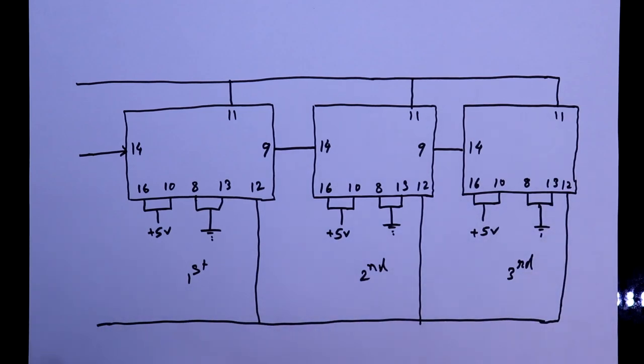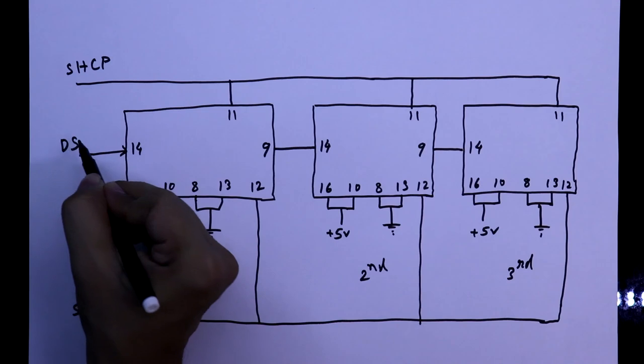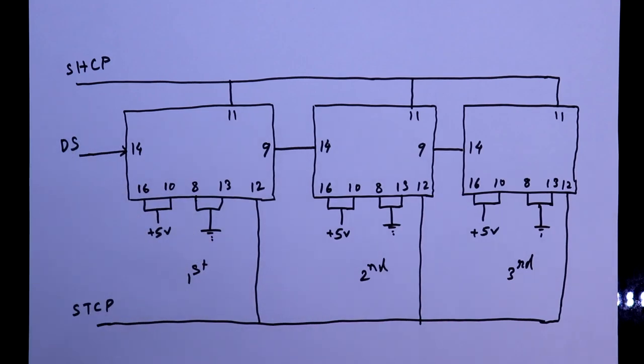So, finally we have STCP pin, SHCP and data in or DS. So this is how we need to cascade this IC. Now we will see this in practical.